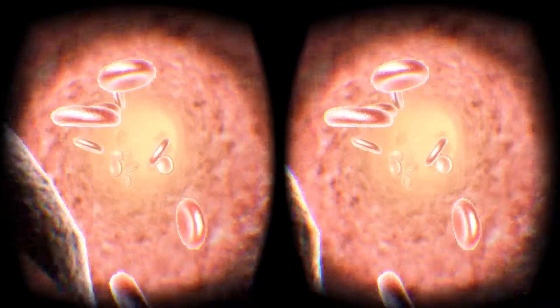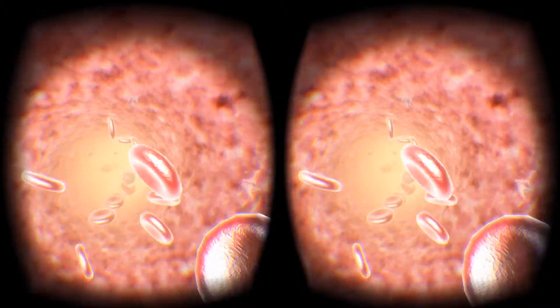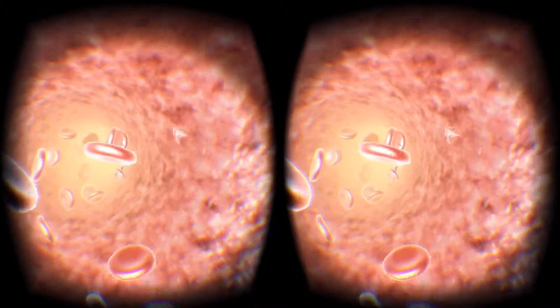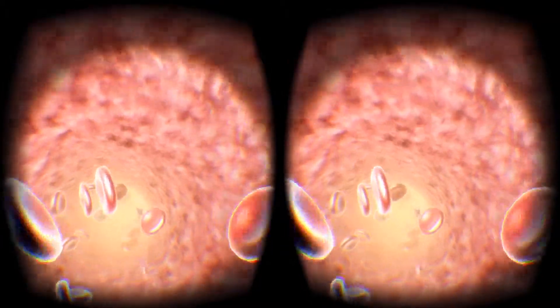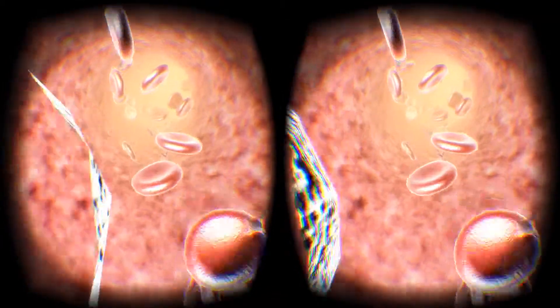Platelets, also called thrombocytes, are blood cells whose function is to stop bleeding. They will gather at the site of a cut and unless the interruption is physically too large, they will plug the holes.